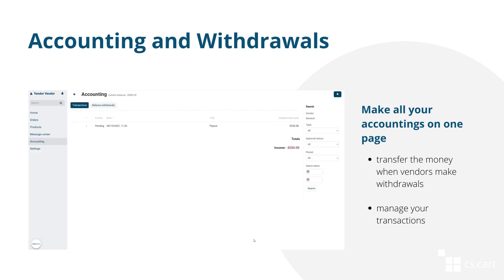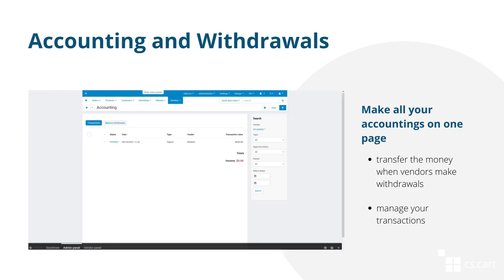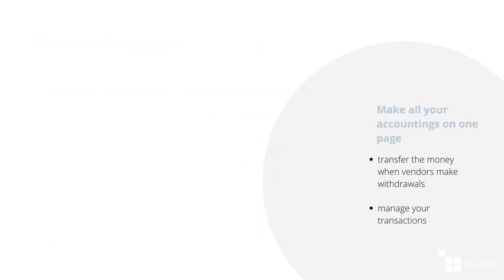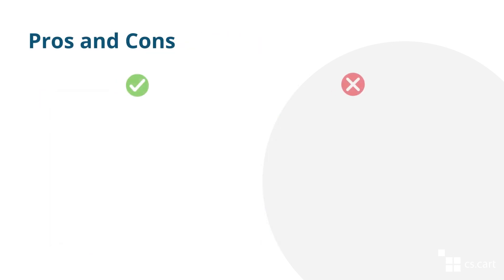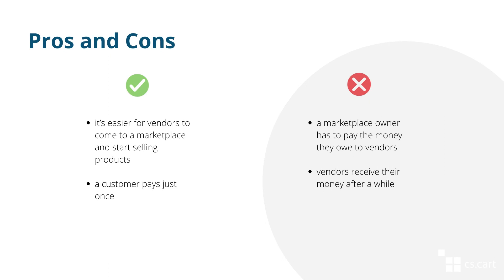Vendors can request withdrawal of their money at any time. It is up to you how to transfer the funds. Once you do that, you can mark the transaction as completed. What are the pros and cons of this model? Pros: it is easier for vendors to come to a marketplace and start selling products, and a customer pays just once. Cons: a marketplace owner has to pay the money they owe to vendors, and vendors receive their money after a while.